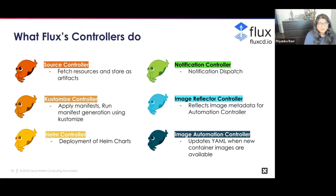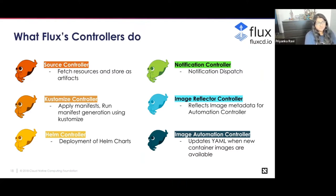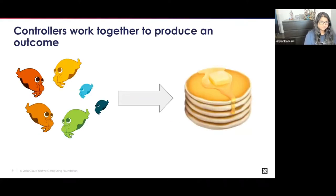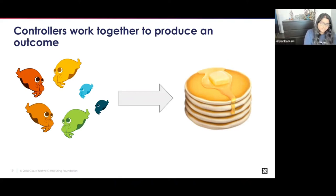The Helm controller does the deployment of Helm charts — it allows one to declaratively manage Helm chart releases with Kubernetes manifests. The notification controller does notification dispatch and specializes in handling inbound and outbound events. The image reflector controller and the image automation controller work together to ensure that if there's a new container image available, it'll actually update your Git repository — they work together in tandem. All the controllers also work together to produce an outcome, and that's the beauty of this microservice architecture.